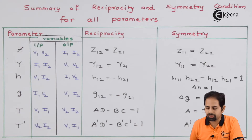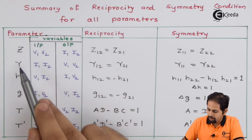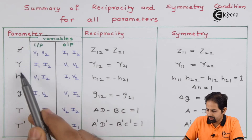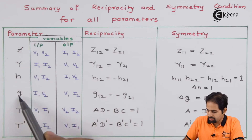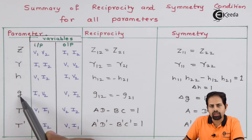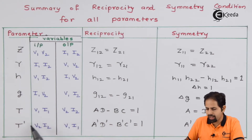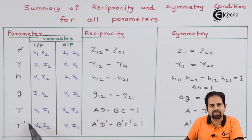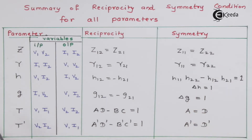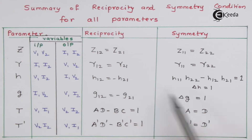You all can see that these are parameters on my left hand side: Z, Y, H, then inverse H or inverse hybrid, then cascade ABCD, and A-dash B-dash or inverse cascade. This is also called as inverse transmission. This is called as transmission parameter. For all these parameters we have done what is reciprocity and symmetry, except this G parameter which is left as an exercise because it is exactly the same as H parameters.